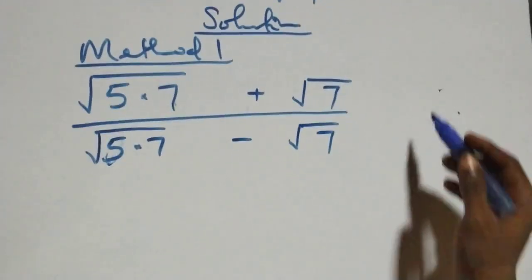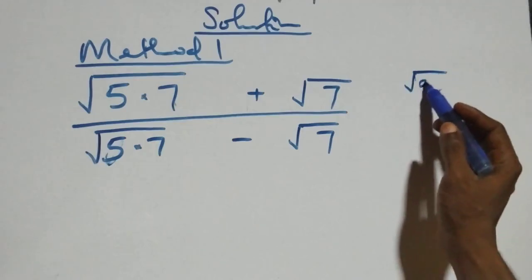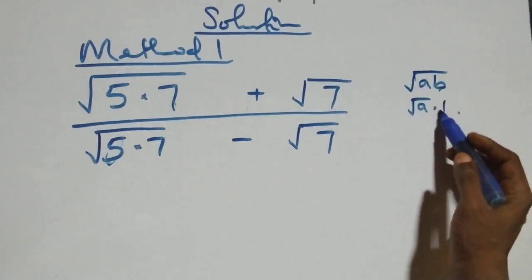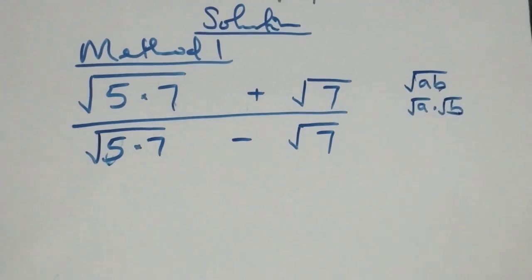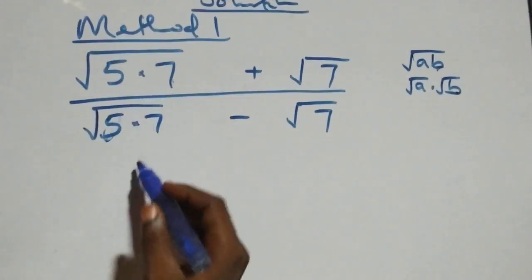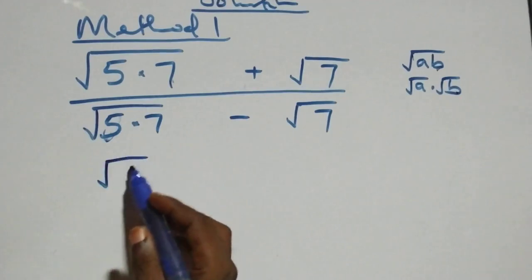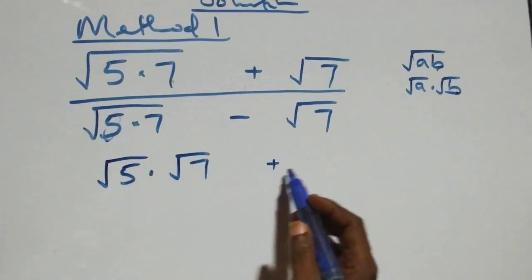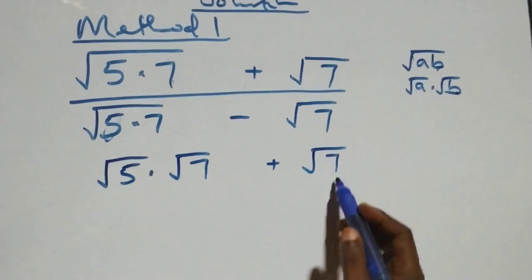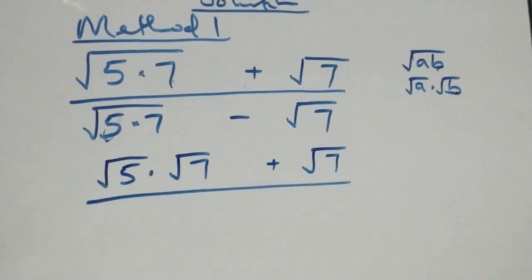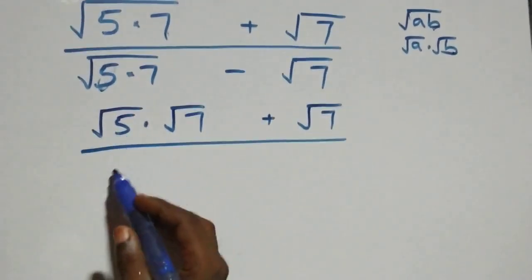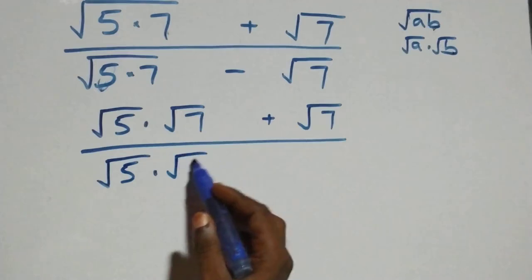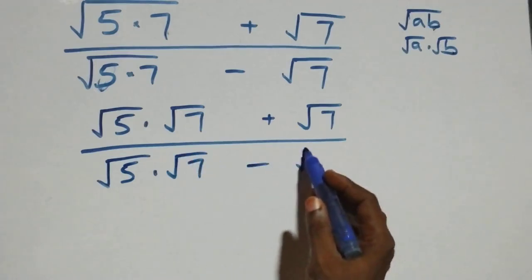From what we have, when we have √(a×b) this can be written as √a times √b. Here we can separate and write it as root five times root seven plus root seven, over root five times root seven minus root seven.